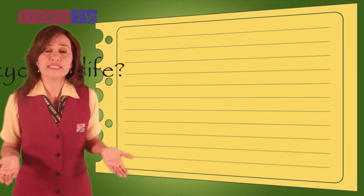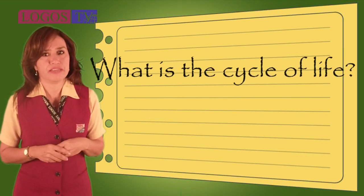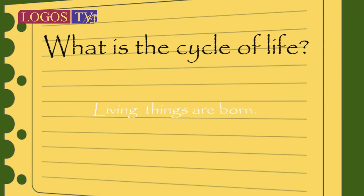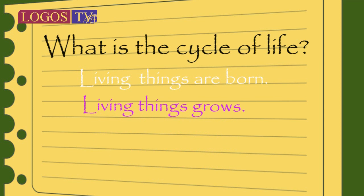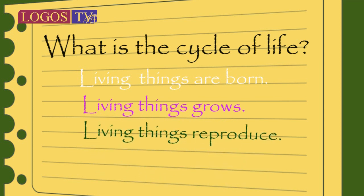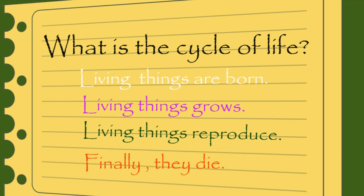What is the cycle of life? First, living things are born. Next, living things grow. Later, living things reproduce. And finally, they die.